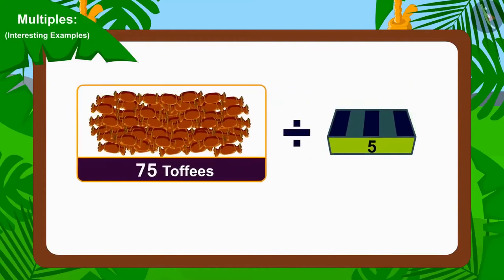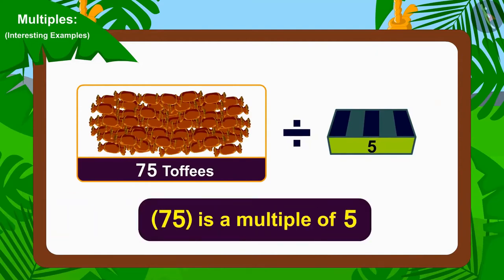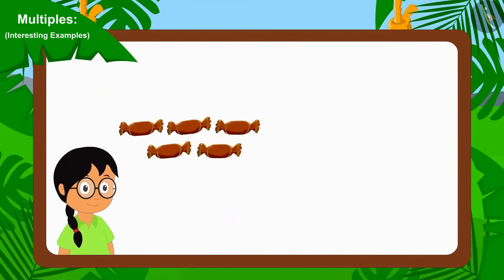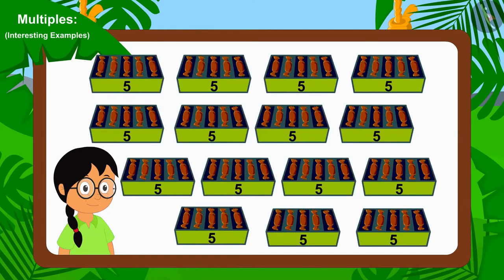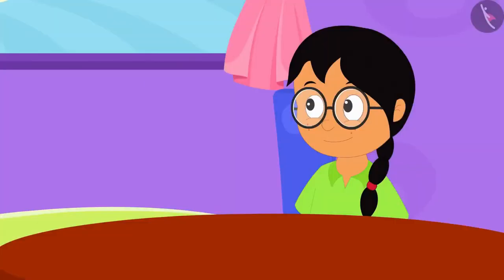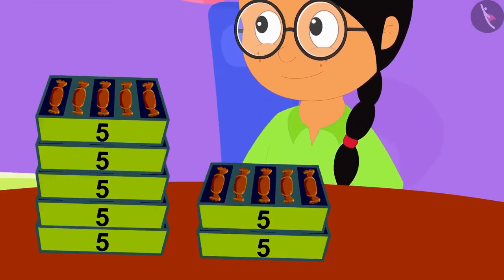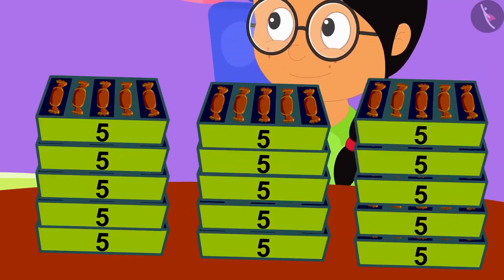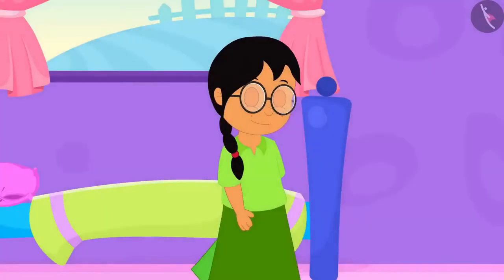Children, you have found the answer absolutely correctly. We can divide 75 by 5. In other words, 75 is a multiple of 5. Therefore, by forming a group of 5 toffees, Meenu can divide these toffees equally among her friends. Meenu made 15 groups of chocolate candies and filled 15 boxes.